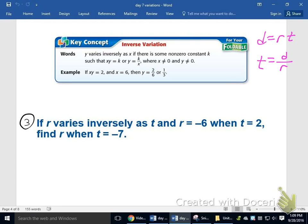Taking a look at this problem, r varies inversely as t. So I'm going to set that up as r varies inversely as t, meaning it's not going to be k times t, but k divided by t. r equals negative 6 when t equals 2. This is our given information. This right here will allow us to figure out what k is.